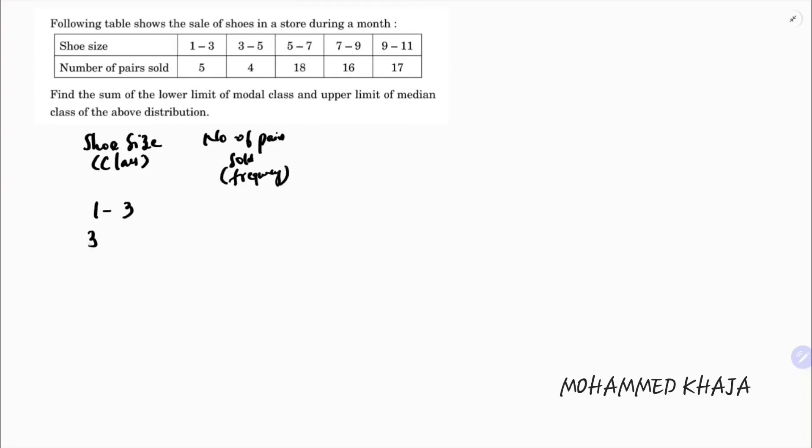The class intervals are 1 to 3, 3 to 5, 5 to 7, 7 to 9, and 9 to 11, with frequencies 5, 4, 18, 16, and 17 respectively. We need to find the sum of the lower limit of the modal class and the upper limit of the median class.